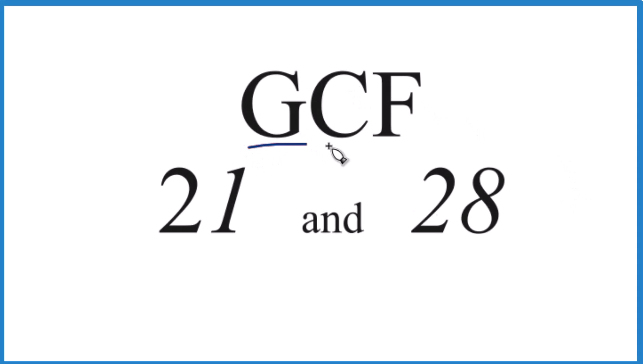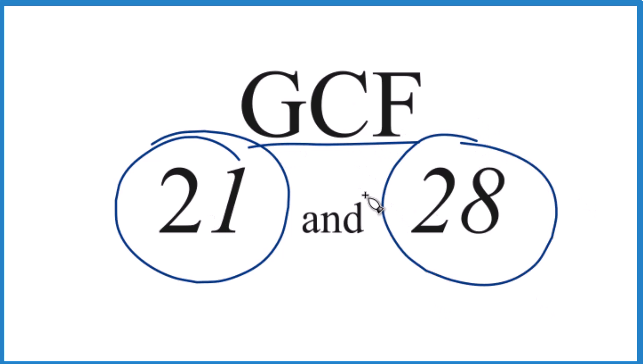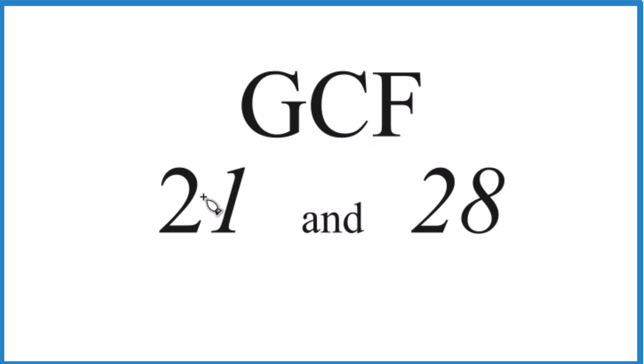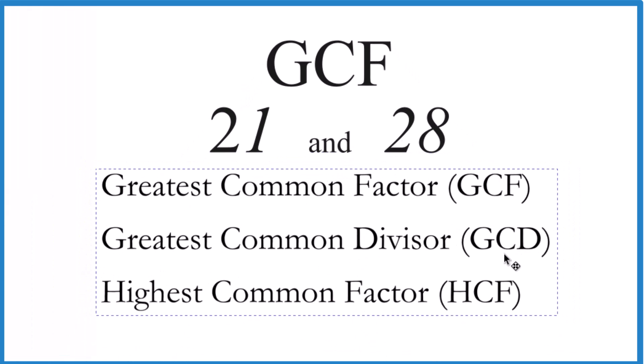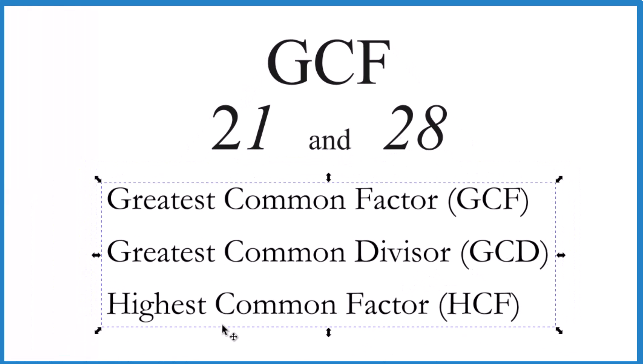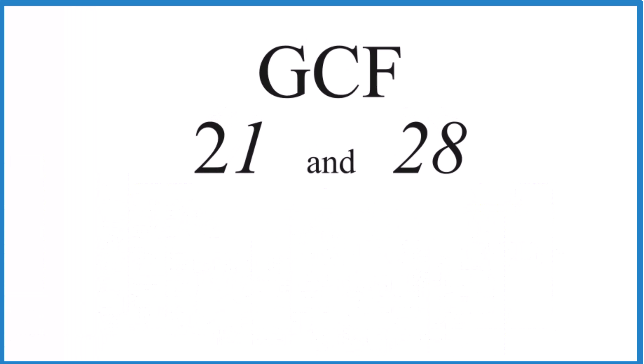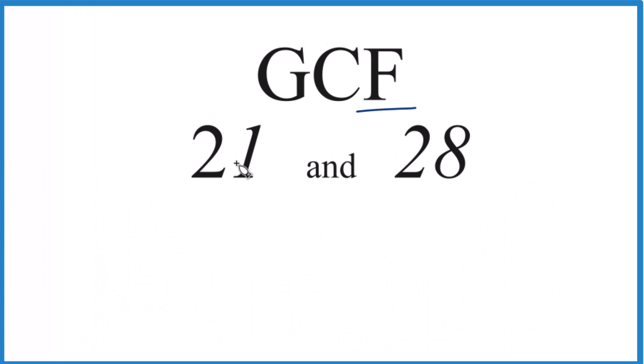Let's take a look at the greatest common factor for 21 and 28, the GCF. Sometimes you'll see that called the greatest common divisor or highest common factor. These are all the same thing. So for the GCF, what we're going to do is line up all the factors for 21 and 28, look at the common ones, and then choose the greatest factor.